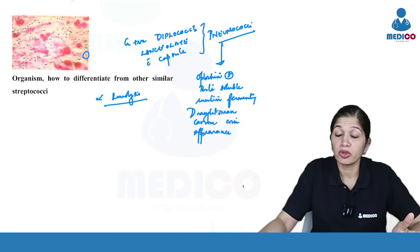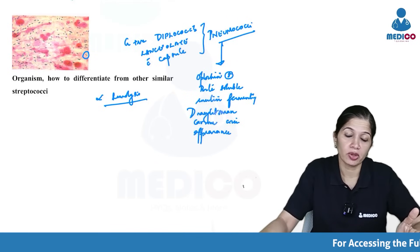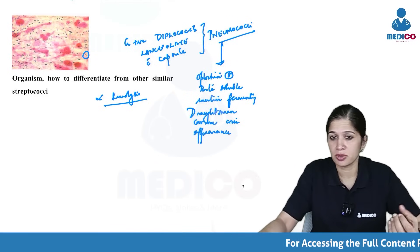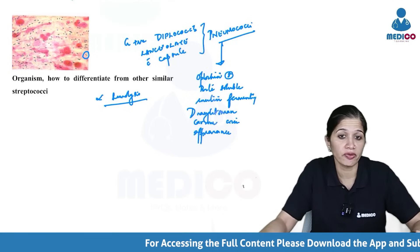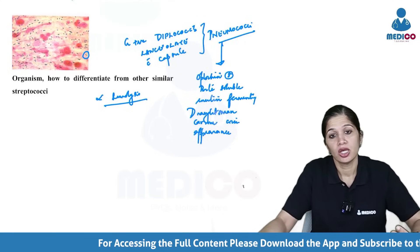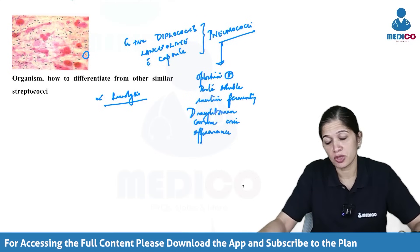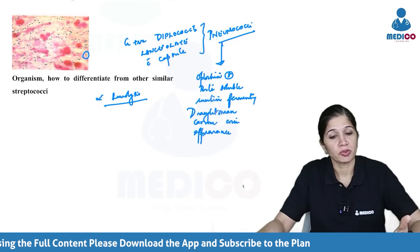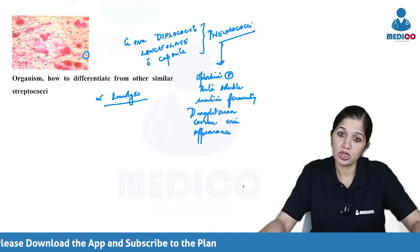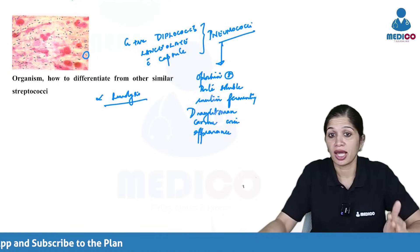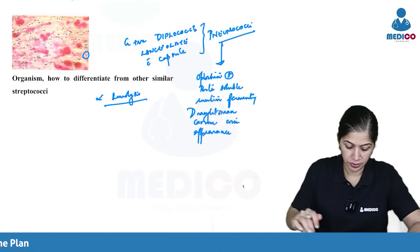The other alpha hemolytic organism is Viridans streptococci. Viridans streptococci is bile insoluble, optochin resistant, and inulin non-fermenting. These are the differences between Streptococcus pneumoniae and the Viridans group streptococci, both of which are alpha hemolytic.